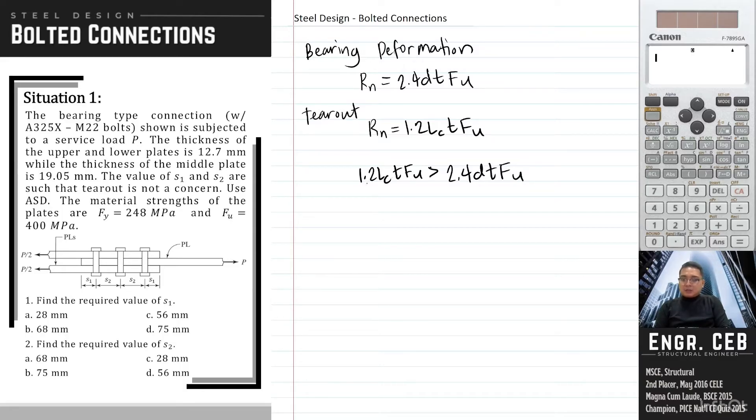If we're going to factor out 1.2t times Fu on both sides, we have this one. We can now cancel 1.2tFu. So we are left with Lc is greater than 2t. So this is the condition to make sure that tear-out will not govern.